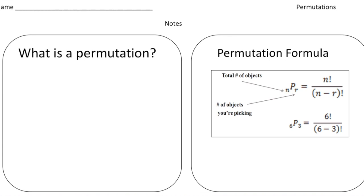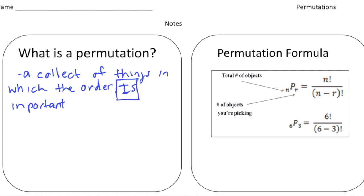So what exactly is a permutation? Well, a permutation is a collection of things where the order is important. So let's write that down right here. It's a collection of things in which the order is important. If you notice, I wrote the word 'is' in capitals. And do me a favor, please box that in. That's really the important thing about permutations - it's a collection of things where the order matters.